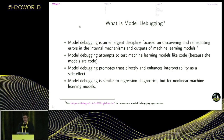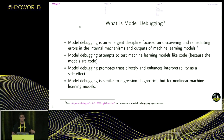Model debugging is kind of an emergent discipline — I don't think it's strictly defined yet. It ports over a lot of best practices from software testing because when a machine learning model is executed, it's some kind of computer code or stored binary executable that can be tested the way we test other computer software.